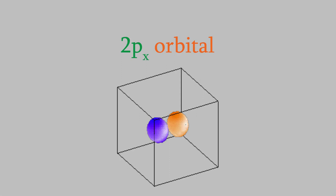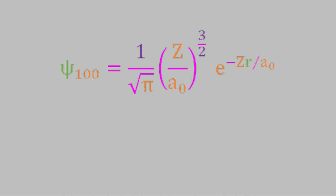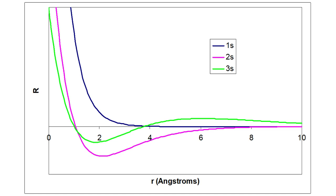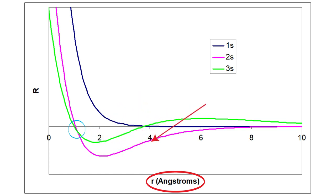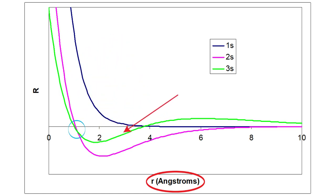Now let's take a closer look at the s wave functions. If we plot the 1s, 2s, and 3s wave functions, here's what we get. The x-axis represents the distance from the nucleus. The 1s wave function starts with a high value and then quickly decreases, asymptotically approaching zero. The 2s orbital also starts high, rapidly decreases, then crosses the x-axis to become negative, then rises again and asymptotically approaches zero. Finally, the 3s orbital crosses the x-axis twice before asymptotically approaching zero.